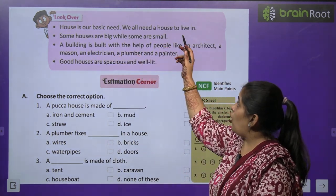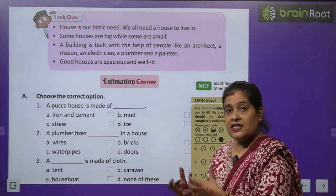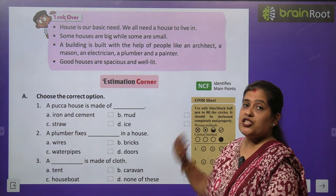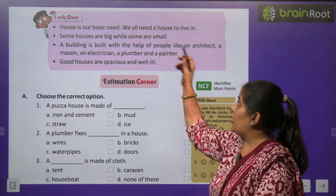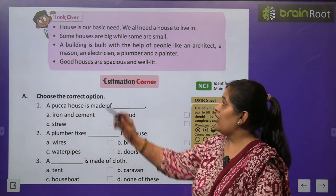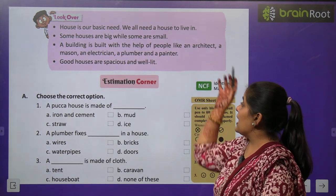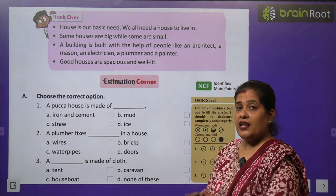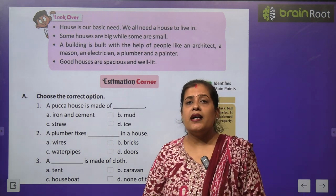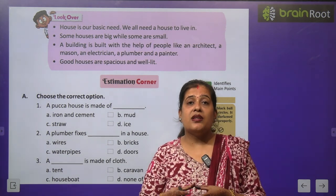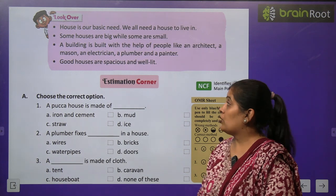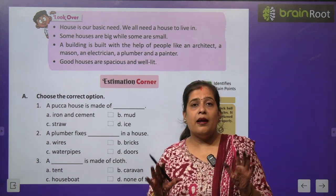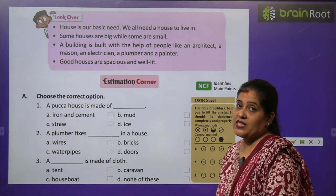Now time for a look-over. House is our basic need — we all need a house to live in, we cannot live without it. Some houses are big while some are small. A building is built with the help of people like an architect, a mason, an electrician, a plumber and a painter — इन सब की जरूरत हमें घर को बनाने के लिए होती है. Good houses are spacious and well-lit — जो अच्छा घर होता है वो spacious और हवादार होता है.